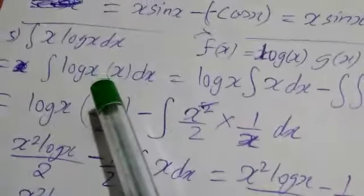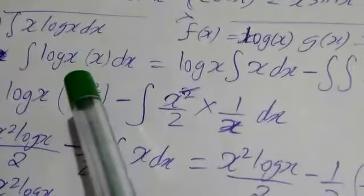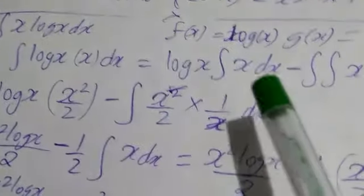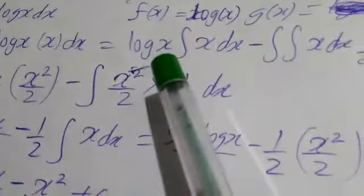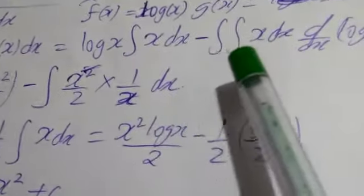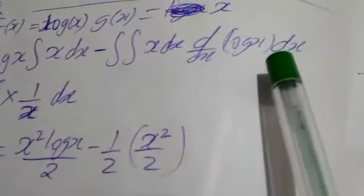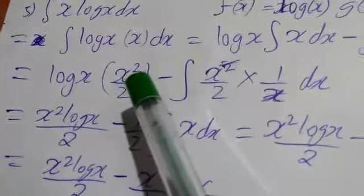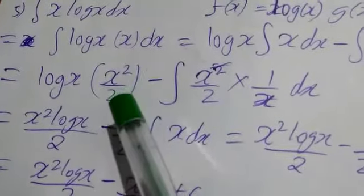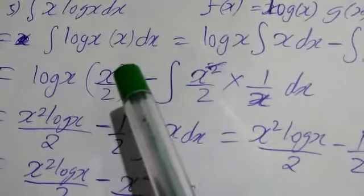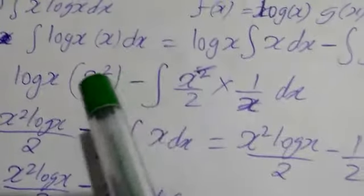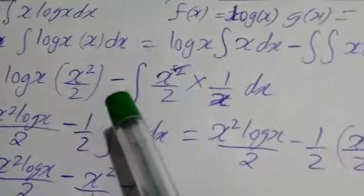I am rewriting it as: integration of log x into x dx. Taking log x as the first term and x as the second term. So: first term log x as it is, integration of x — minus double integration of x, d by dx of log x dx. Now log x as it is, integration of x will become x squared upon 2 — that is the x raise to n formula: x raise to n+1 divided by n+1, where n is 1, so we get x squared upon 2.